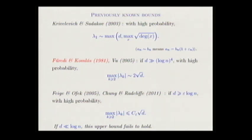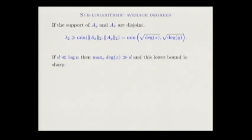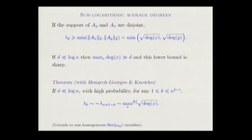When d is much less than log n, the random matrix scaling is not true anymore. This is easy to see: if you have two rows with disjoint support, the second largest eigenvalue is at least the minimal L2 norm of those two rows, which is just the square root of the degree. So when d is much less than log n, the maximal degree is much larger than its expectation. Together with Benaych-Georges, we proved that the k-th largest eigenvalue is roughly the k-th largest square root of the degrees.